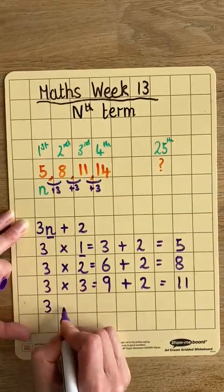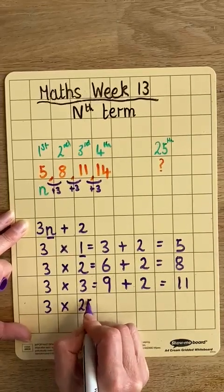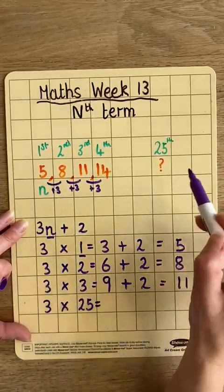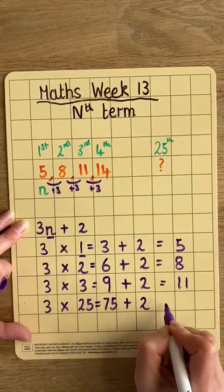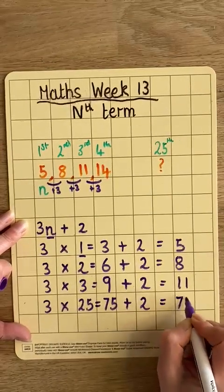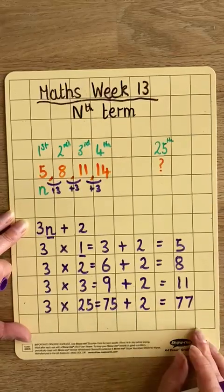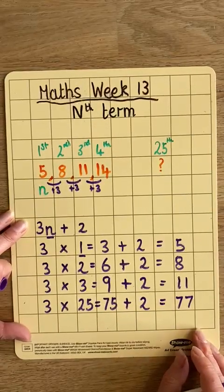3n, 3 times 25, equals 75, add 2, equals 77. So our 25th term is 77.